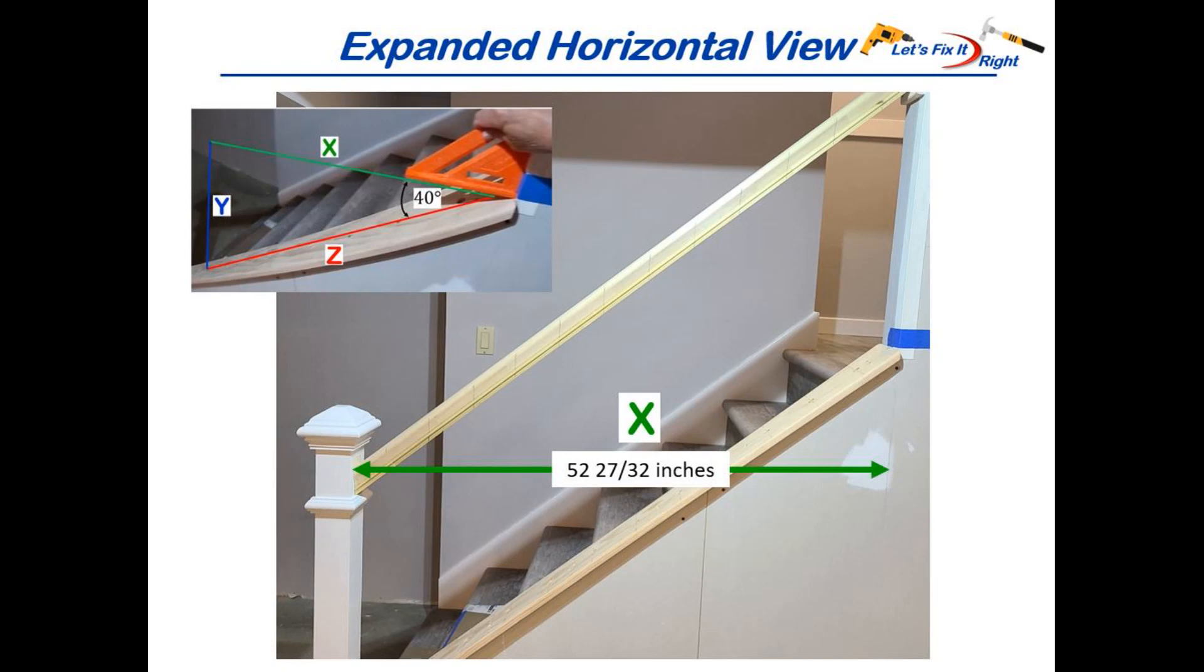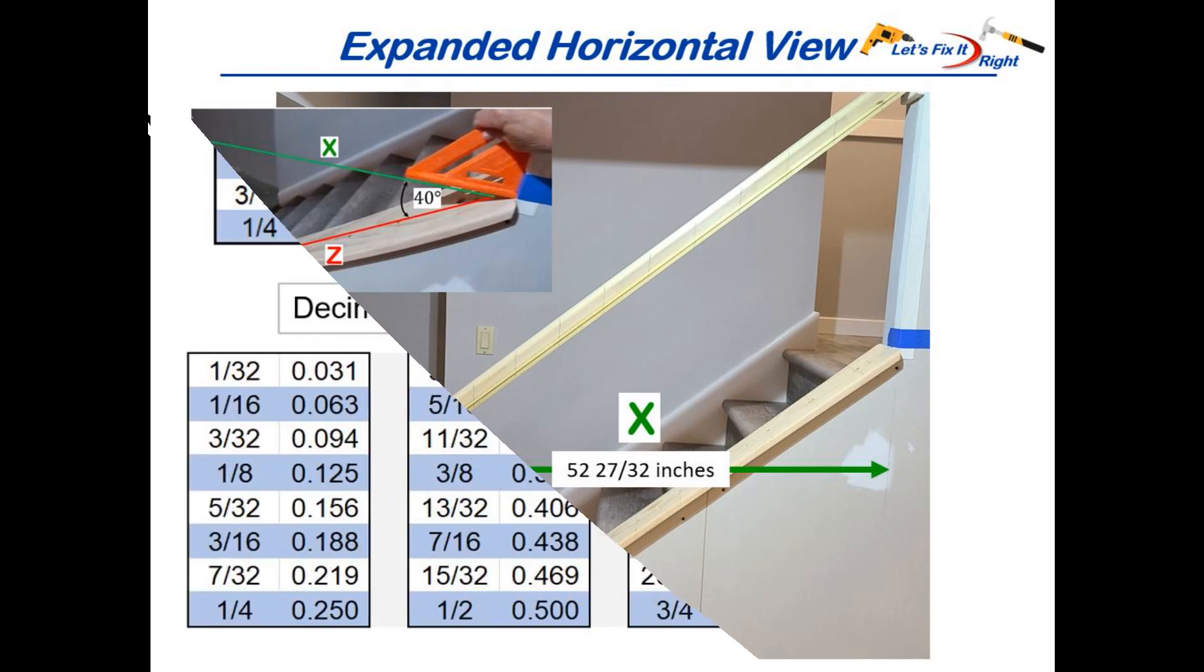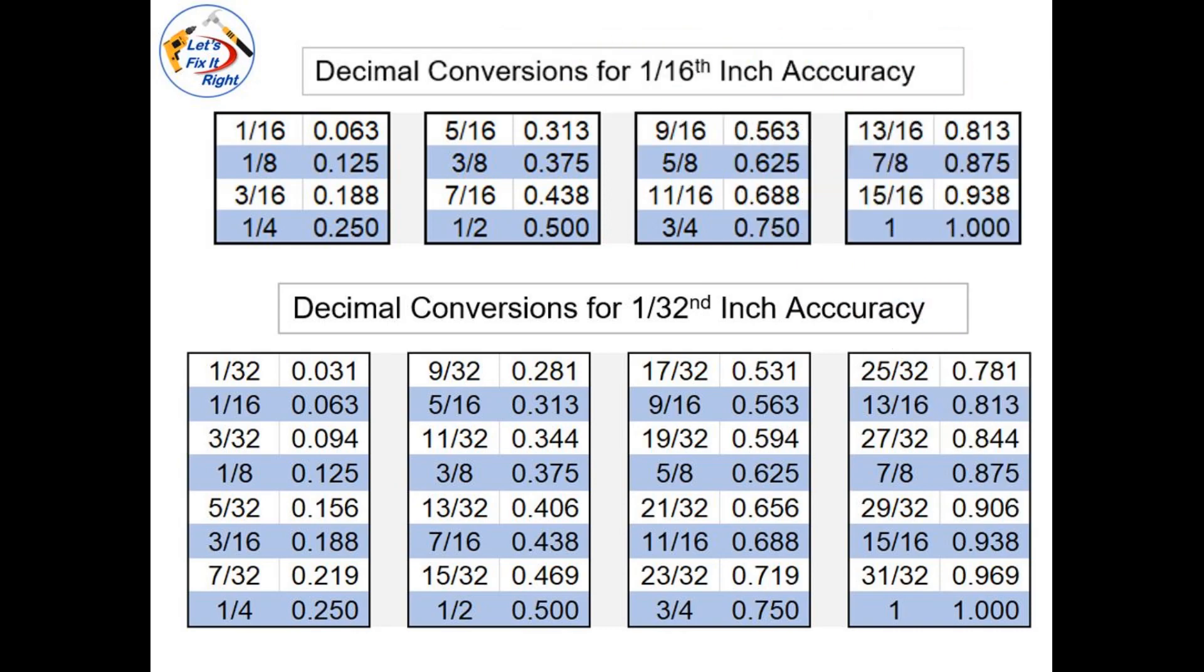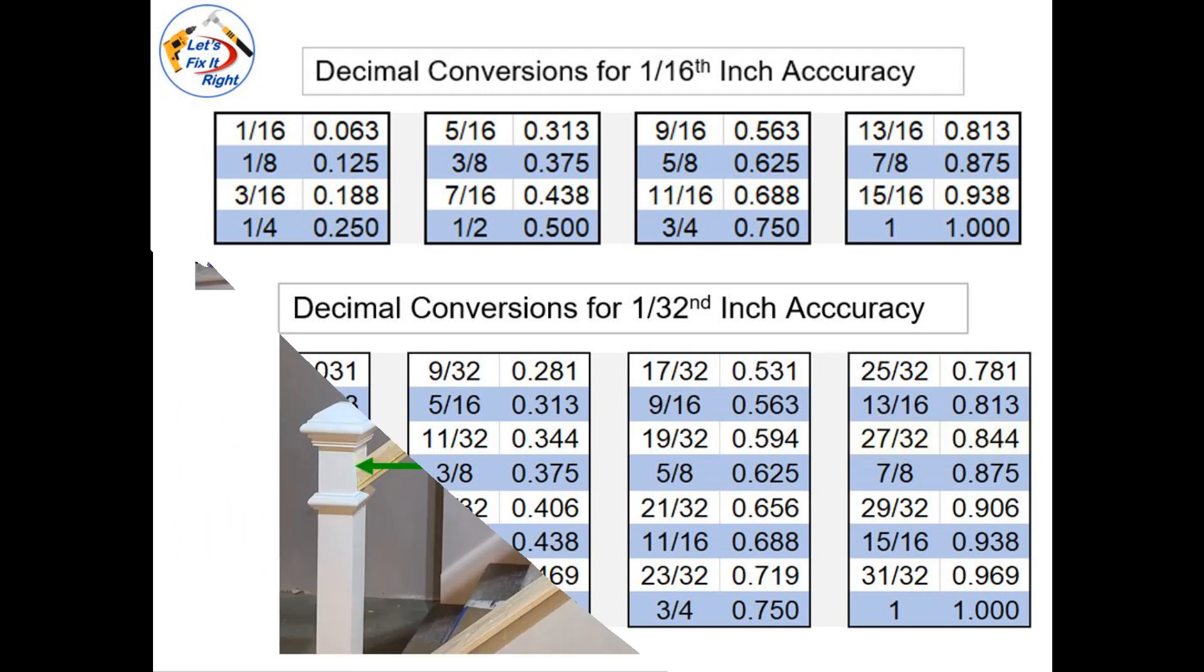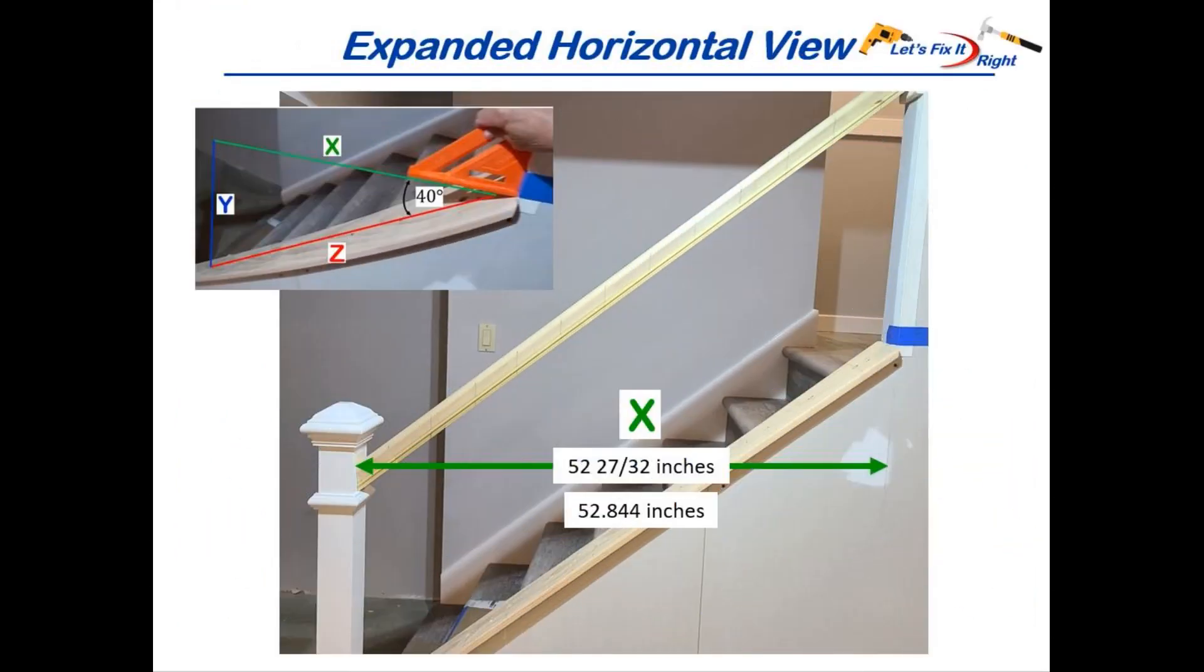Next I captured the total distance x from the newel to the wall. Referencing my let's fix it right decimal conversion table shows that 27/32 of an inch equals 0.844 for easier calculation purposes. So my total distance x is 52.844 inches.